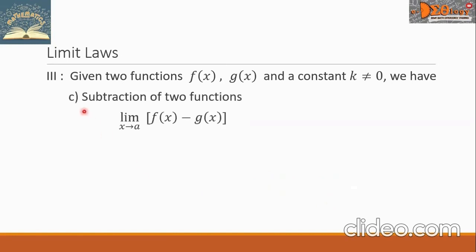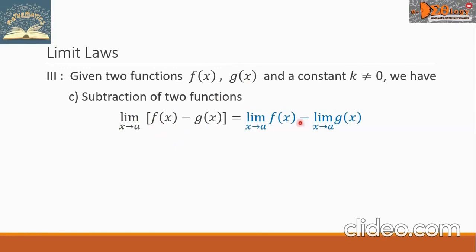Letter C — subtraction of two functions. The form is the limit as x approaches A of f of x minus g of x. We take the limit of each function and then subtract. We have the limit of f of x as x approaches A, minus the limit of g of x as x approaches A.